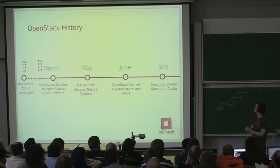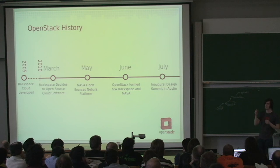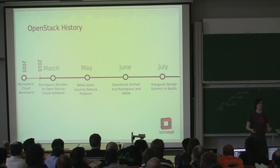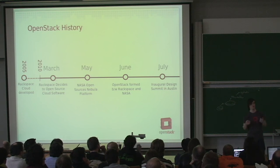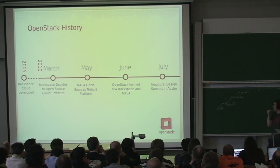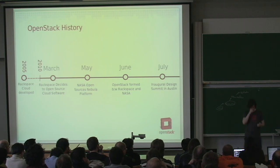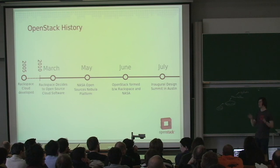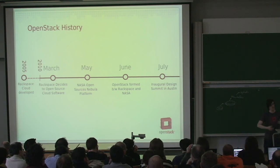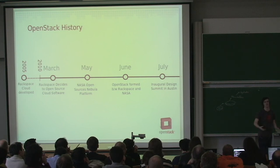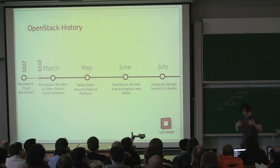That was mid-June. Then stuff started moving really fast. In early July we sent invitations to a bunch of companies that might be interested in cloud computing — as service providers or in-house — inviting them to an inaugural design summit in Austin, Texas. We were completely surprised when about 200 people turned up, even though no one really knew the details. All they knew was that Rackspace was doing this open source cloud thing.